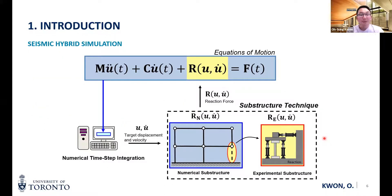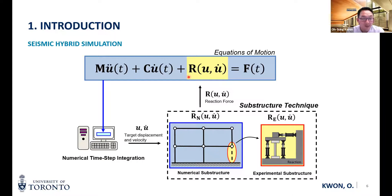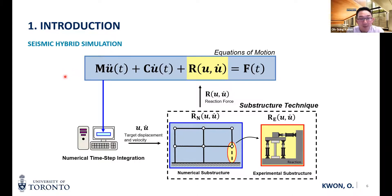For a structure subject to dynamic load, such as earthquake load, we solve an equilibrium equation. In this equilibrium equation, the restoring force term is typically difficult to model numerically, especially for a structure subject to seismic load. So to represent the static behavior of a structural element experimentally, we can build a specimen in the lab, build the rest of the system numerically, integrate them, and put them back into the equation of motion. By solving this equilibrium equation step by step, we can simulate system-level behavior where part of the system is modeled physically.